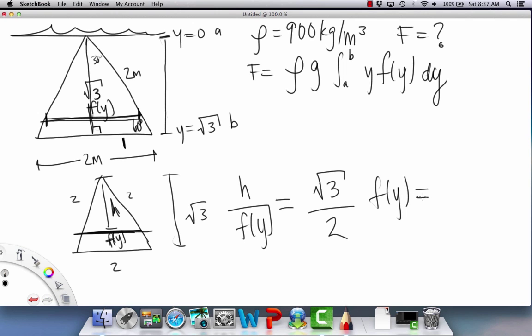What we actually get is that f of y is equal to two over radical three of h. And h is our depth, which we can also denote as y, that's what we're using for depth. So f of y is equal to two over radical three y.